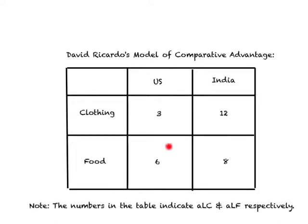What about food? In the U.S., we require six units of labor time to produce one unit of food. In India, it requires eight units of labor time. In the case of food as well, the U.S. is relatively more efficient in production of food relative to India. So here you see an example where the U.S. is better than India in every line of production.